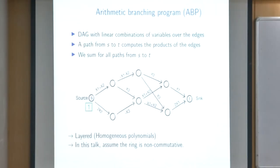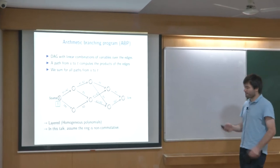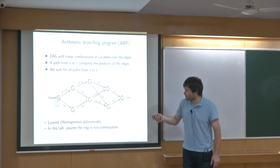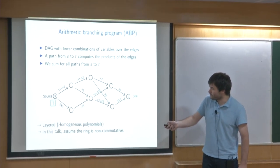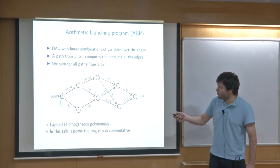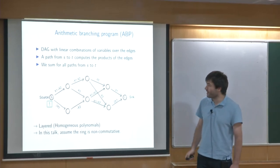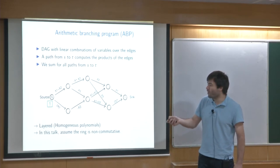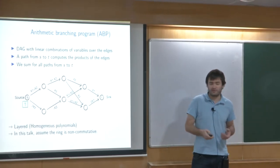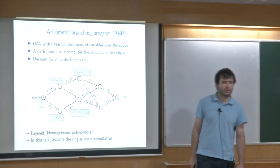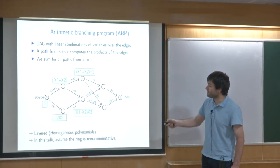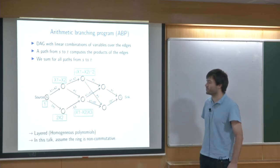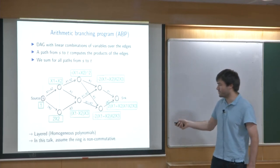In this talk we consider the ABP model — arithmetic branching programs. A branching program already exists for the Boolean world. It is a directed acyclic graph with a source and a sink. Along each edge you compute some linear form written on the edge. The value computed at the end is the sum of all paths from s to the sink, where the value of each path is the product of the linear forms along it. So at one gate you compute x1 minus x2 times x3, and so on, computing all polynomials to get a polynomial at the end.